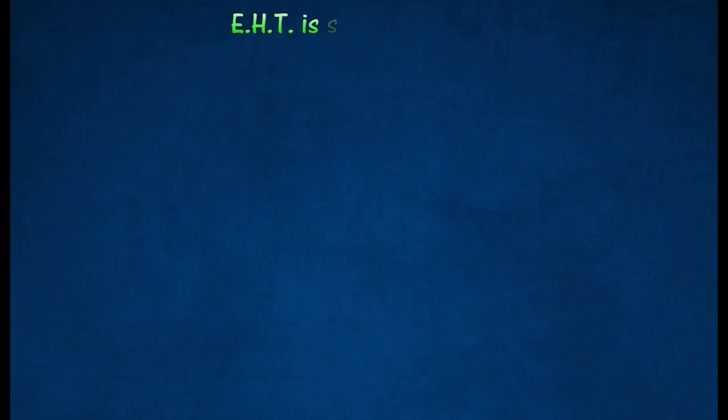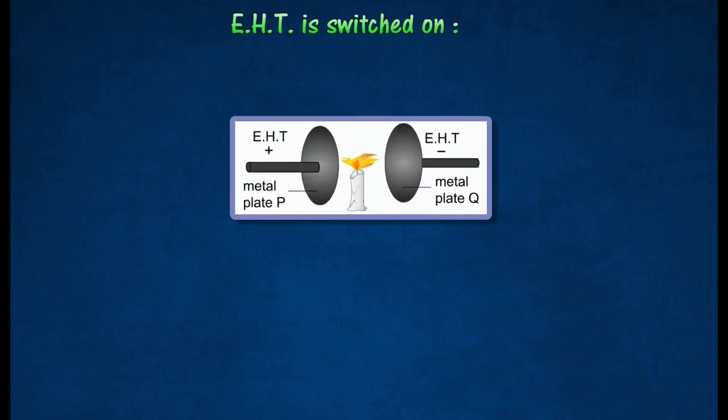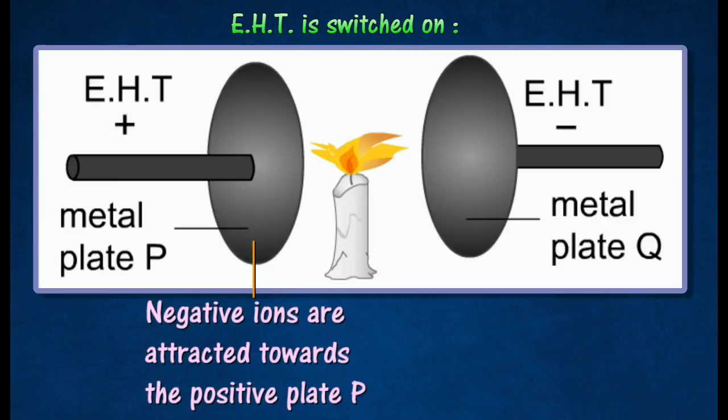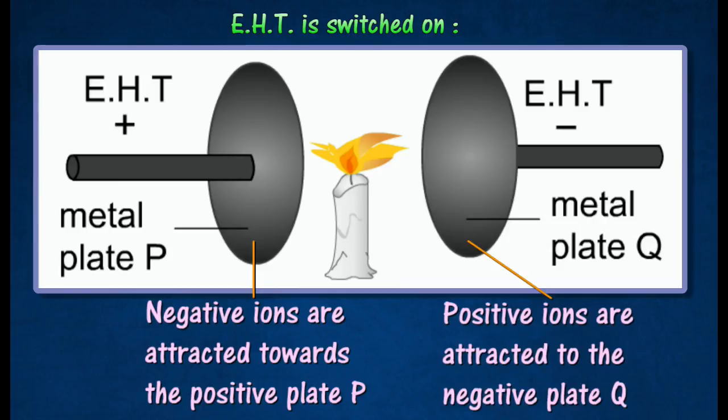When extra high tension power supply is switched on, the negative ions are attracted towards the positive plate P. At the same time, the positive ions are attracted to the negative plate Q. The movements of the ions toward plates P and Q cause the candle flame to spread.